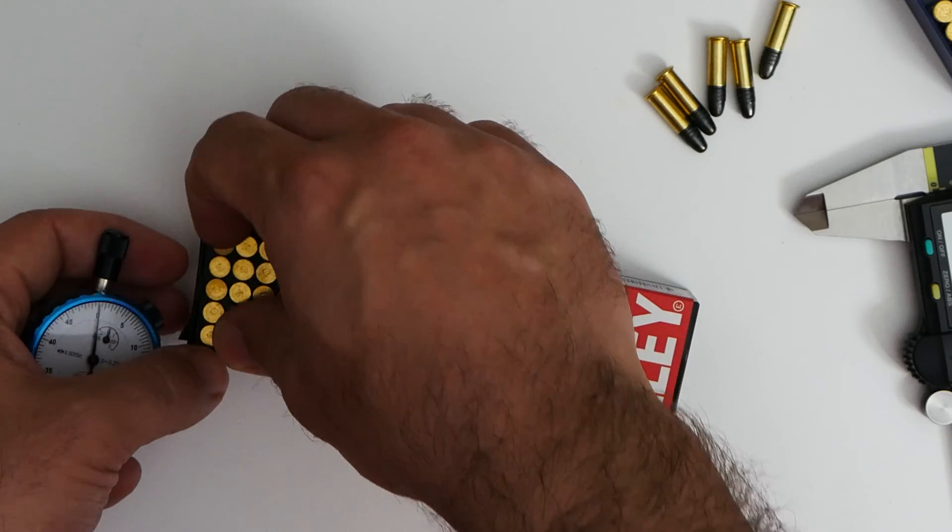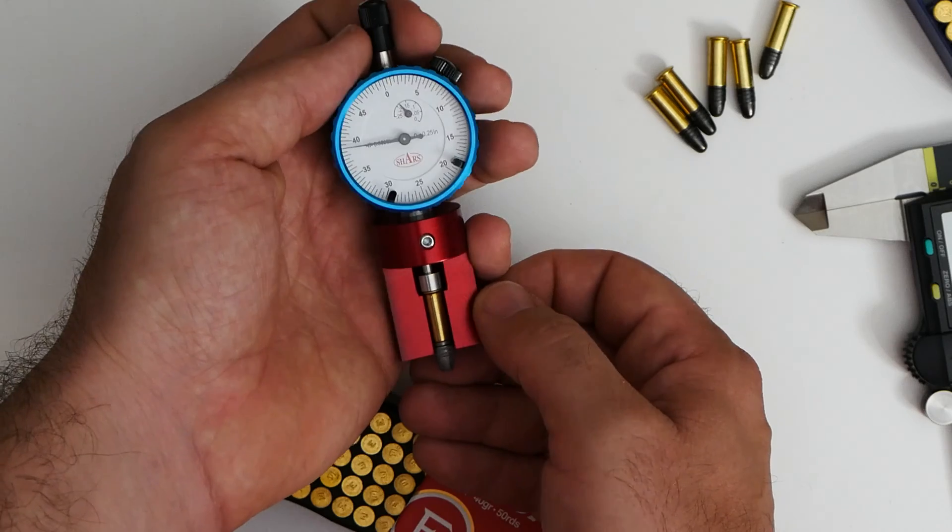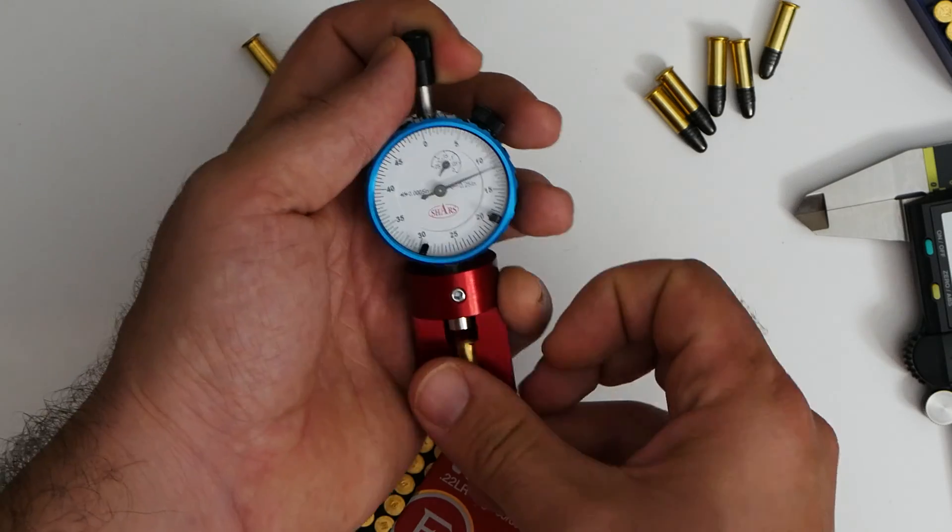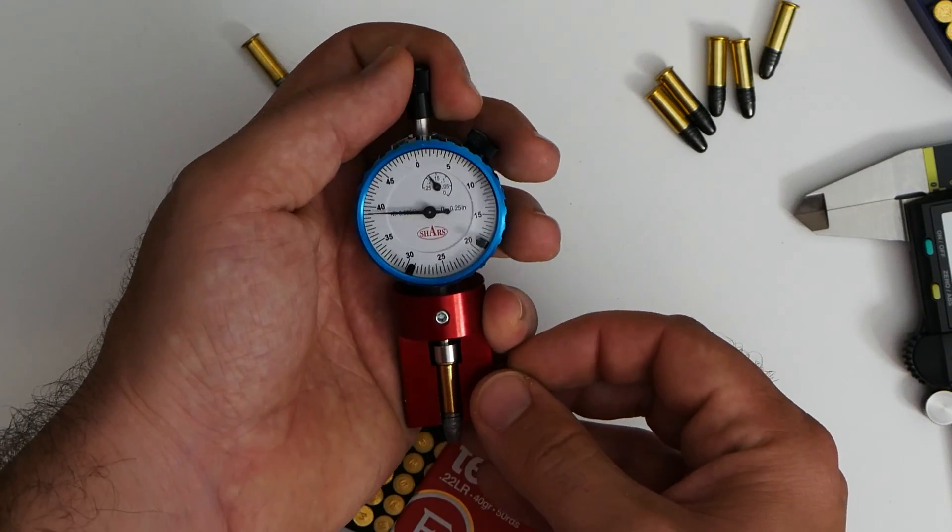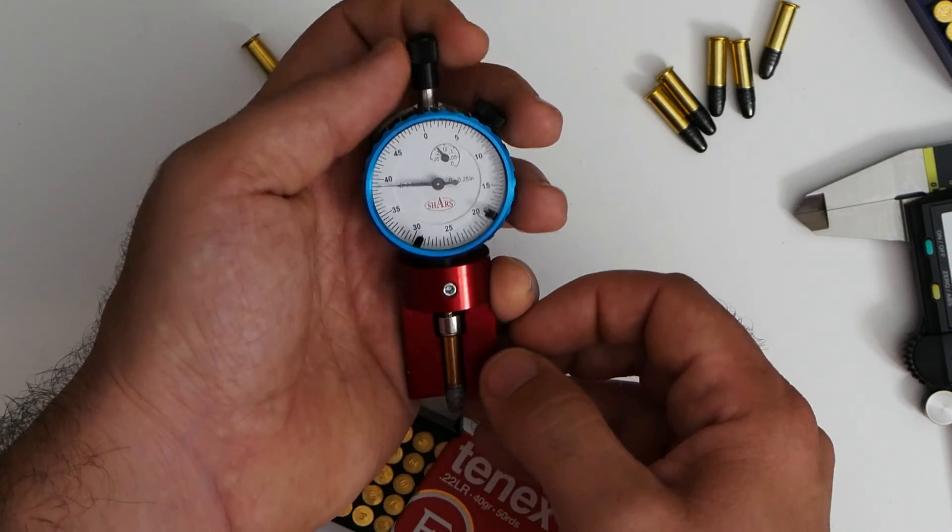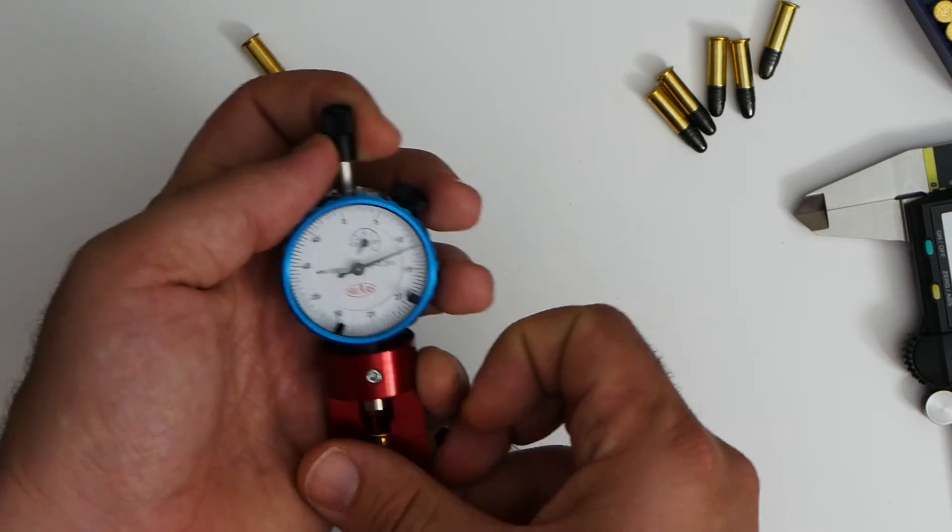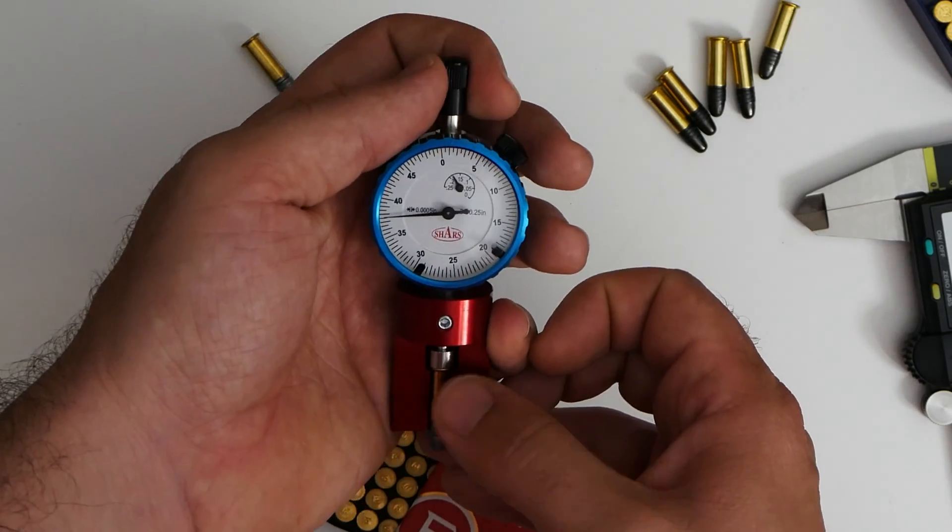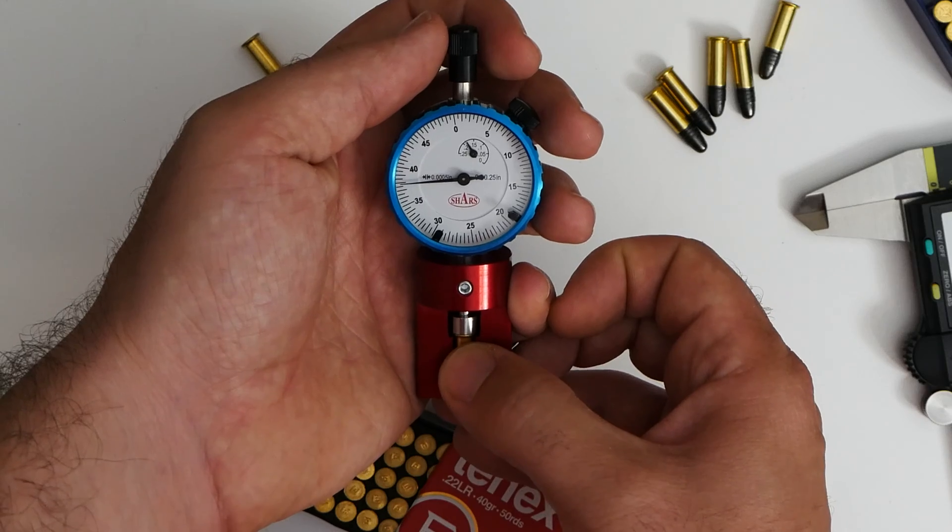And I think the biggest surprise for most people is something from Ely. So we have some 10X here. And there we're all the way at 39. So I found that Ely has probably the thinnest rims. There's another 39. Let's go through these quickly. 39. Pretty consistent. 39. And 38. 38.